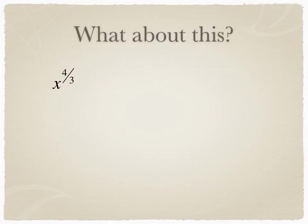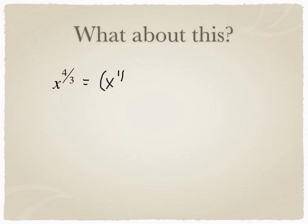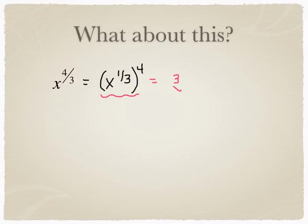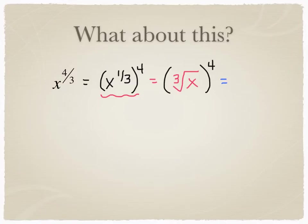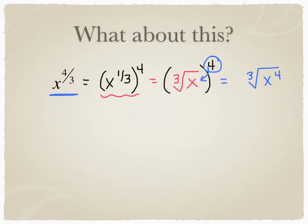So what happens when you have something like this where it's not just one over a number? You remember this from last chapter: x to the power of four thirds. What we would do, if you think back to last chapter, is write it as x to the one third, to the power of four. Well, x to the one third we could write as the cube root of x, and that would still be to the power of four. Or, I'm also allowed to write it as the cube root of x to the fourth power — I could take that four and put it down inside. So I want you to see that these two forms are equivalent.